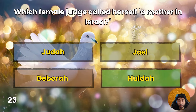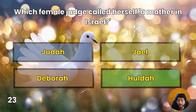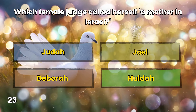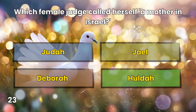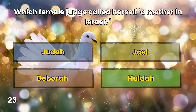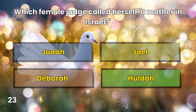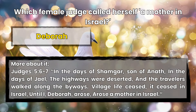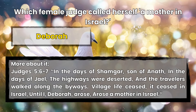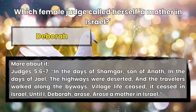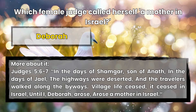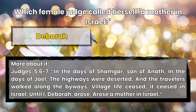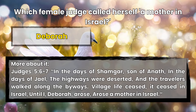Question 23: Which female judge called herself a mother in Israel? Judah, Jael, Deborah, or Huldah? Deborah. Judges 5:6-7 — 'In the days of Shamgar son of Anath, in the days of Jael, the highways were deserted, and the travelers walked along byways. Village life ceased, it ceased in Israel, until I, Deborah, arose — arose a mother in Israel.'